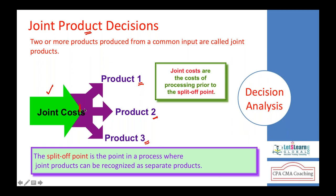We separate the products at the split-off point. Until that split-off point, we incur costs combined for all products — say, thirty thousand dollars spent for all three product types. We identify and separate them — Product One, Product Two, Product Three — only after reaching the split-off point stage.